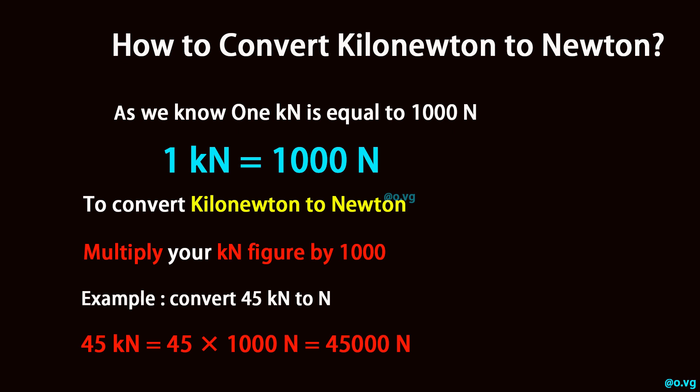Example: convert forty-five kilonewton to newton. Forty-five kilonewton is equal to forty-five times one thousand newton, which equals forty-five thousand newton.